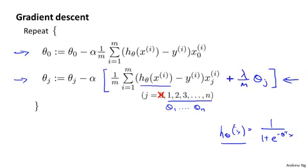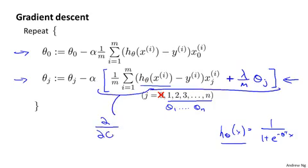And of course, just to wrap up this discussion, this term here in the square brackets is of course the new partial derivative with respect to theta j of the new cost function J of theta, where J of theta here is the cost function we defined on the previous slide that does use regularization. So that's gradient descent for regularized linear regression.